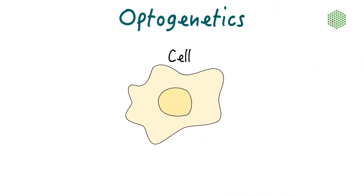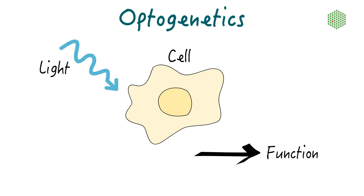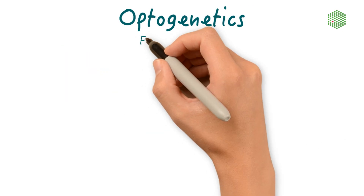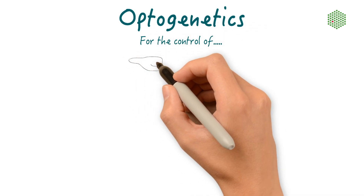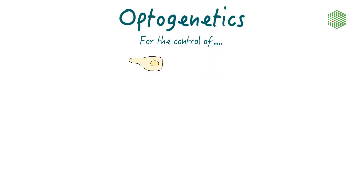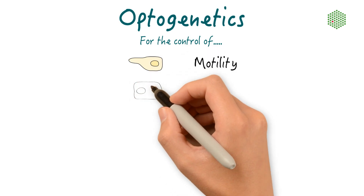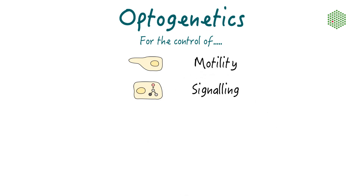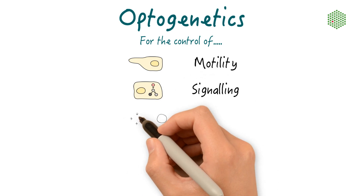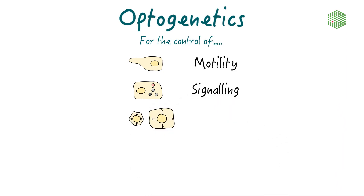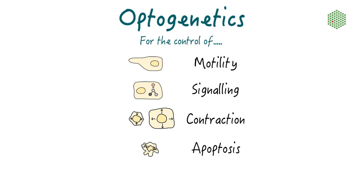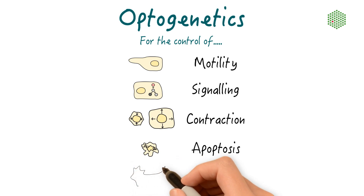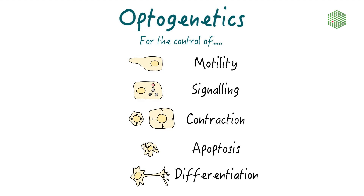Optogenetics, a technique which combines genetics with light stimulation, is starting to be used in cell and developmental biology to control basic biological processes. For example, we can specifically guide the movement of a cell in a certain direction. We can regulate cell signaling pathways by controlling the activity of membrane receptors or downstream effector proteins. We can also induce and prevent actomyosin contractility of a cell or tissue. We can control life-death decisions such as triggering apoptosis upon light exposure. And finally, we can enforce a specific cell fate by the light-dependent control of cell differentiation.